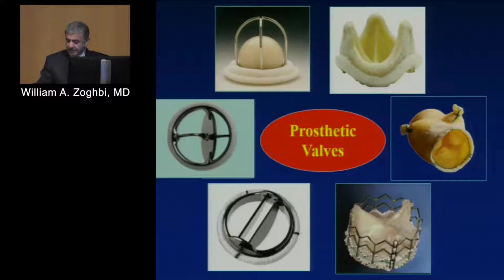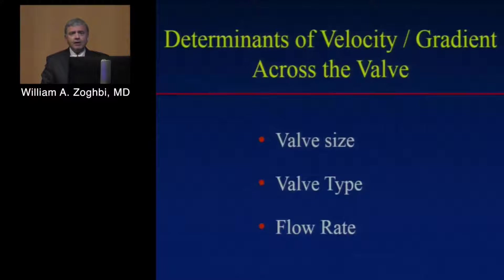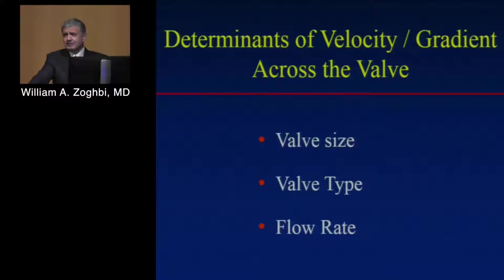And obviously we also have the newer generation of percutaneous valves — TAVRs — that, amazingly, have among the best flow profiles of prosthetic valves that have stents on the outside. So how do we evaluate that? Because of that complexity, there are, believe it or not, more than 25 kinds of valves out there with so many different sizes.